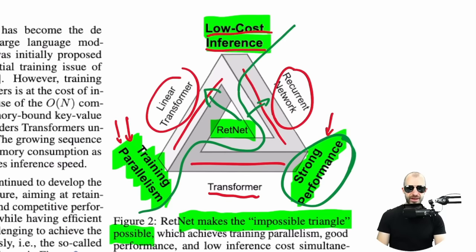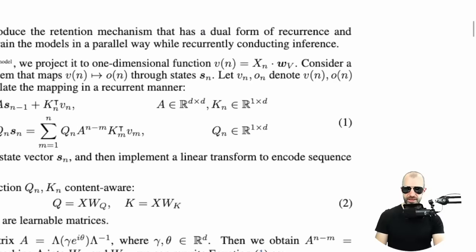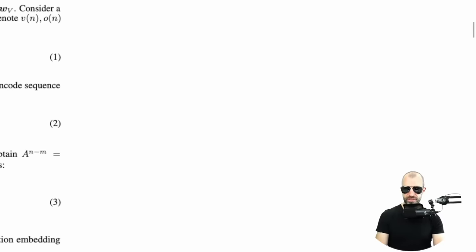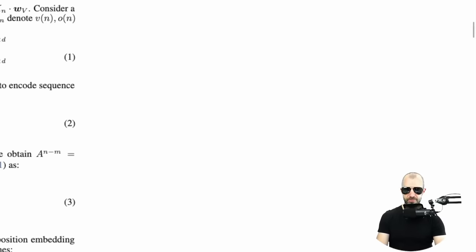They achieve this by essentially going the route of RWKV and building something that is both a transformer-ish model and also a recurrent model. In essence, what RetNet does is make everything into a linear computation. And by being linear, they can be both parallel and recurrent at the same time. Let's demonstrate why a recurrent network cannot be trained in parallel.